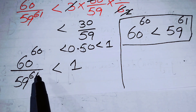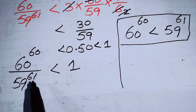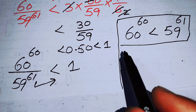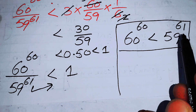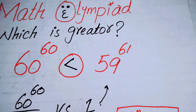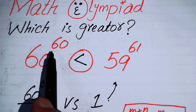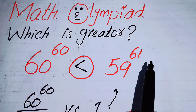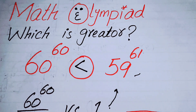Since 60^60 / 59^61 < 1, moving 59^61 to the right-hand side gives 60^60 < 59^61. Therefore, the number 59^61 is greater than 60^60. That is our final answer. Thank you so much for watching this video — please subscribe to my channel for more exciting videos.